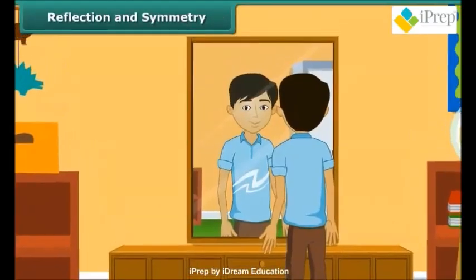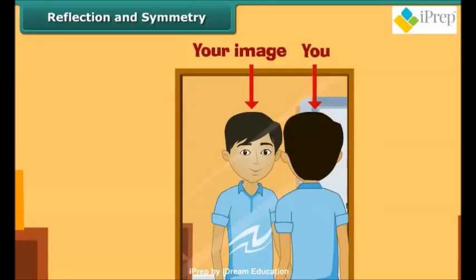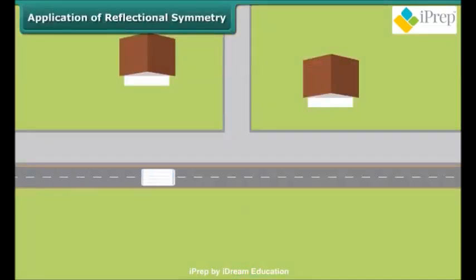Students, you must have noticed that when you see yourself in front of a mirror, you and your image are identical. The image is the reflection of the object in the mirror line. Notice that there is no change in the lengths and angles; however, in the image, the left portion of the object becomes right, whereas the right part turns left.